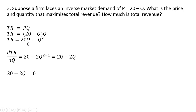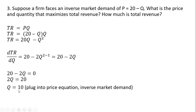Making that substitution and simplifying, then taking the derivative of 20Q minus Q squared, we get 20 minus 2Q. Setting that derivative equal to 0 and solving for Q — just like in problem two — total revenue is maximized at 10 units of output. We can plug this 10 into the price equation to get the price. Plugging 10 into the inverse market demand gives a market price of $10.